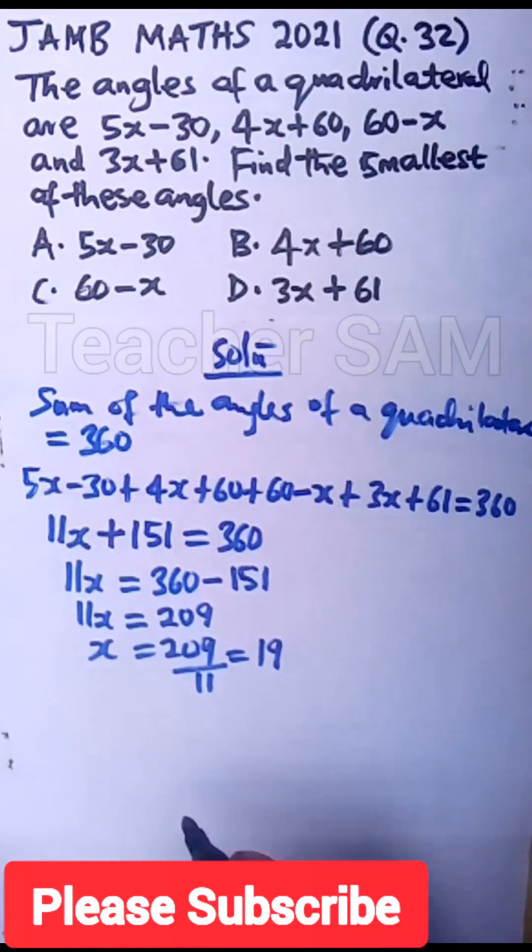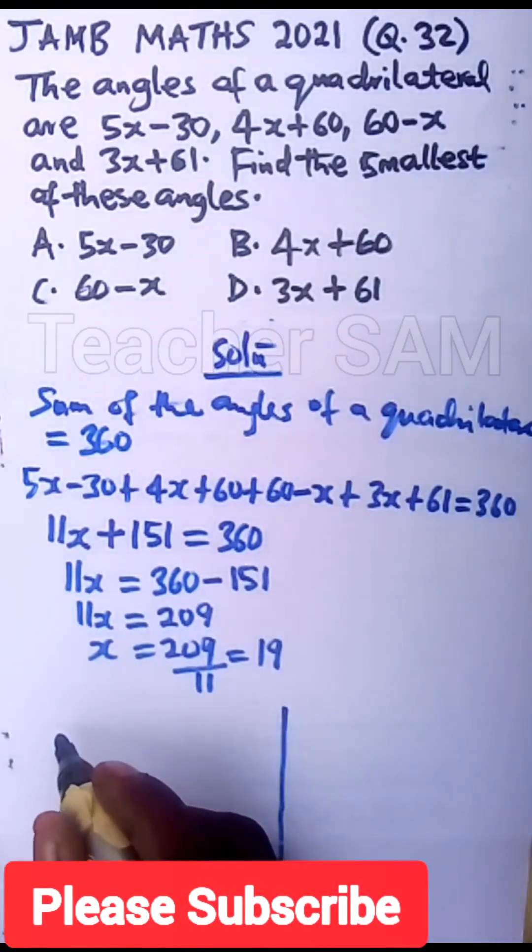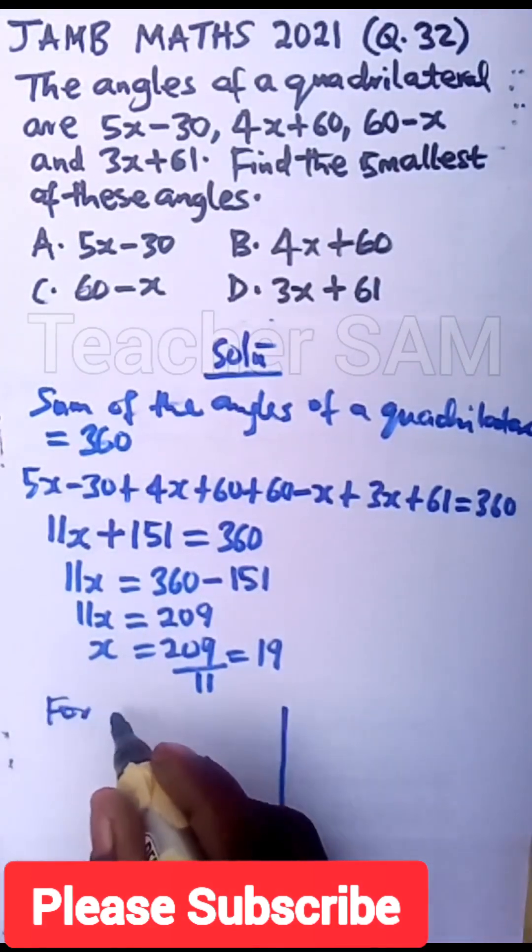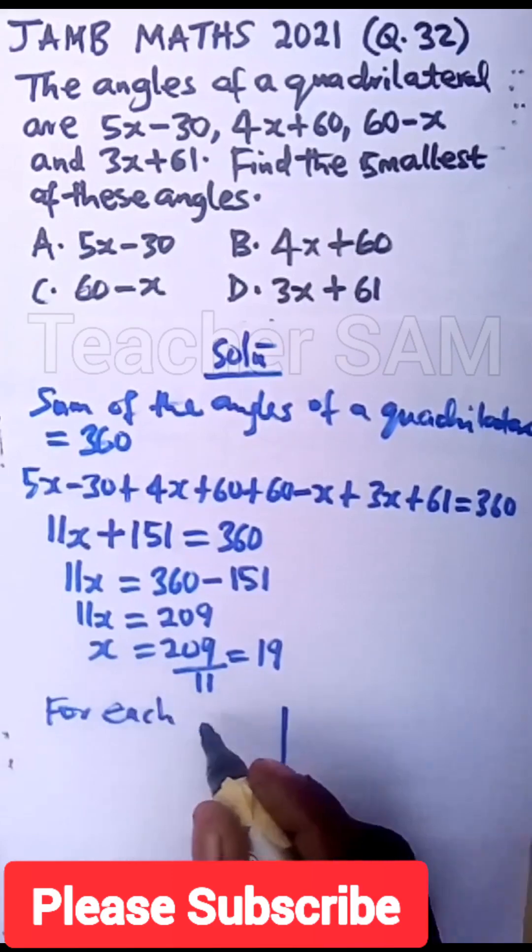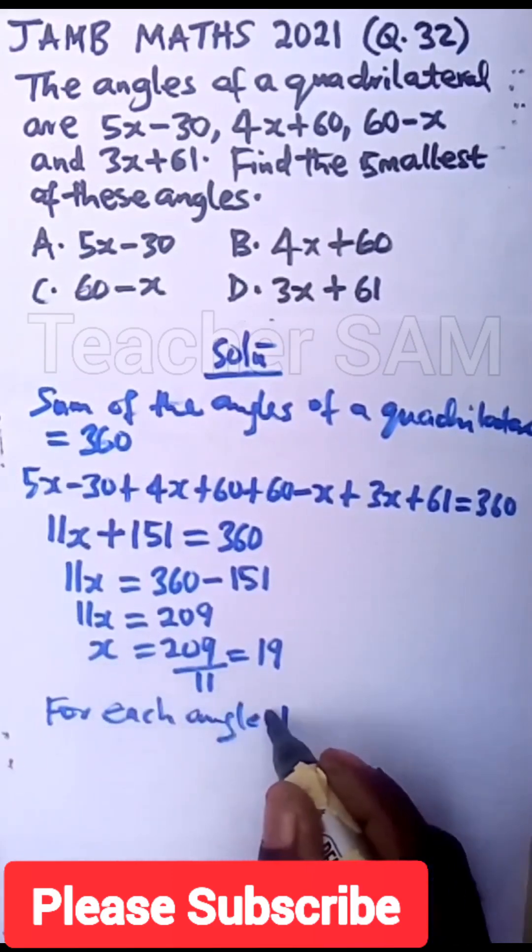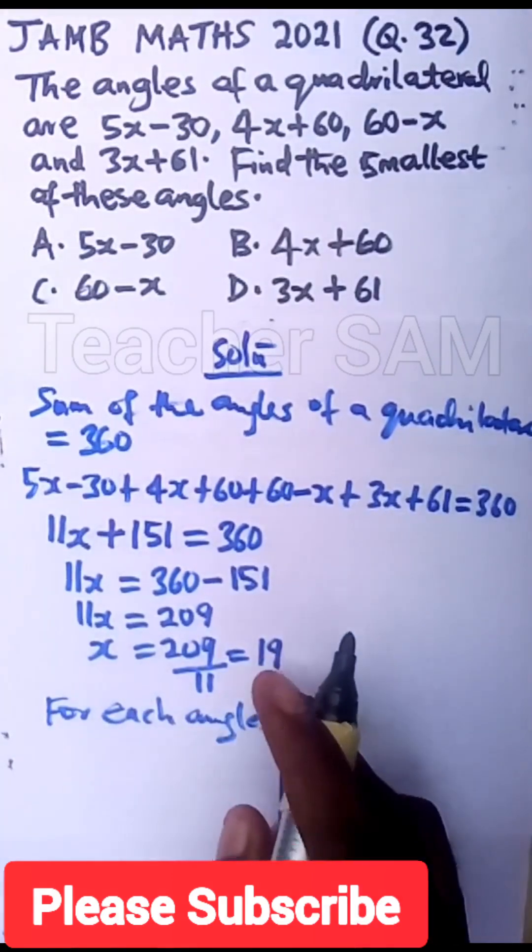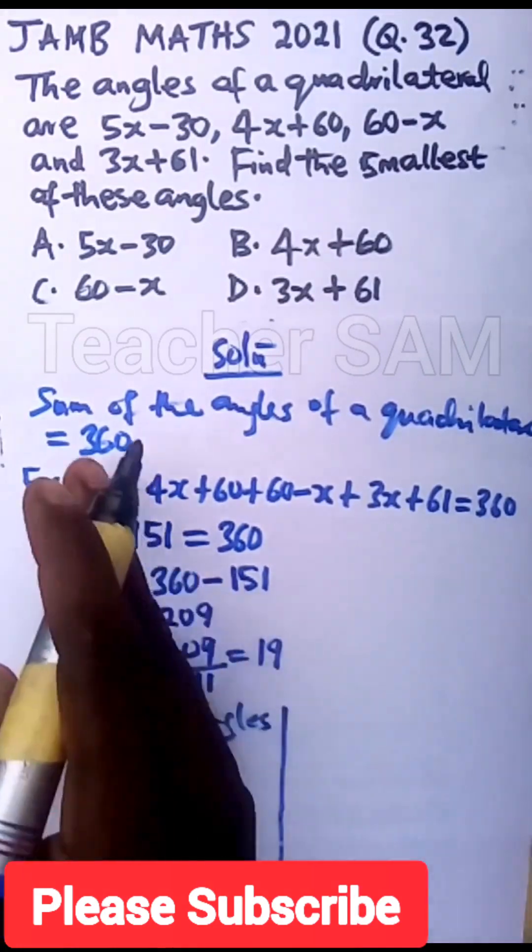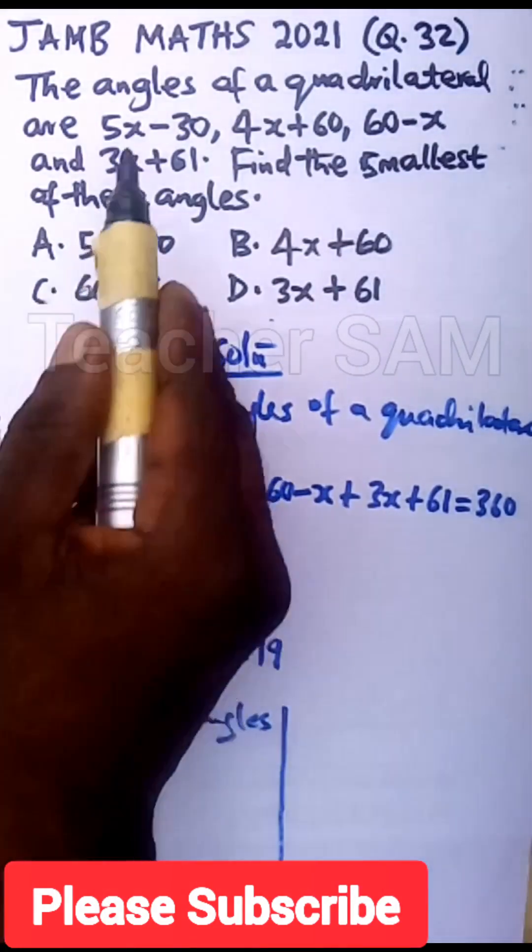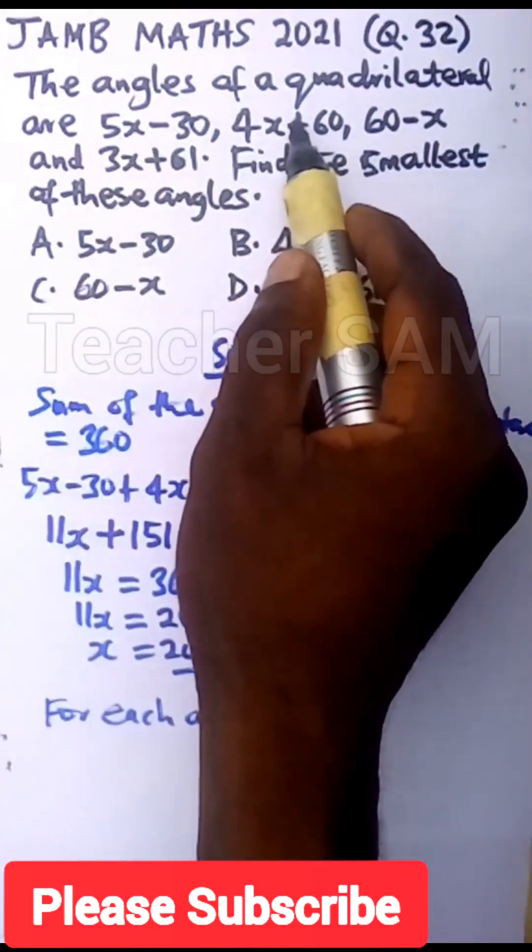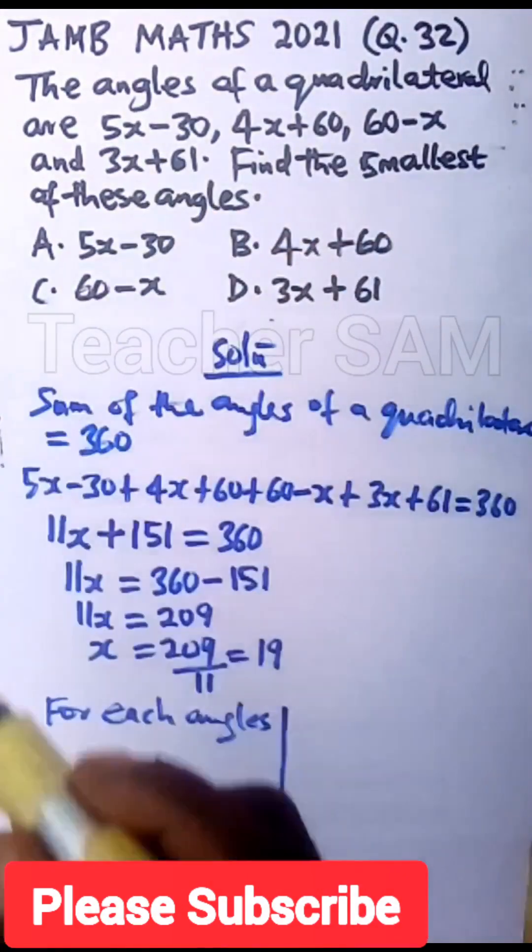Now let's solve for each angle. So I'm going to divide this into two halves so that we can have enough space to solve for each angle. So for each angle, we are going to substitute the value of this x into each of the angles. So remember we have this angle, we have this angle, we have this angle, and we have this. So for the first angle,